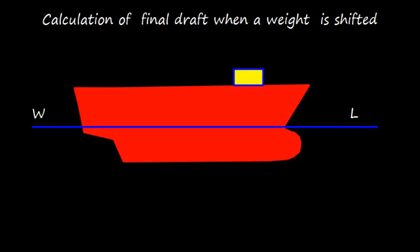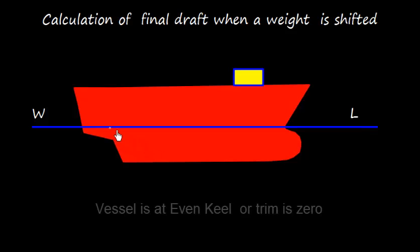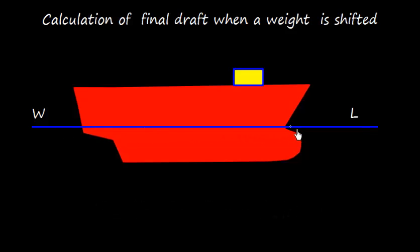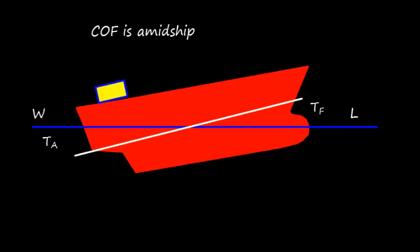Let us consider this example where this is the vessel and this is the waterline. For sake of simplicity, let us assume that the vessel is at even keel. That means the forward draft and aft draft are the same, or the trim is zero — all drafts throughout are the same — and we consider this scenario.